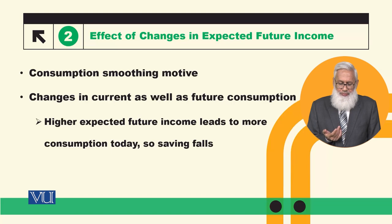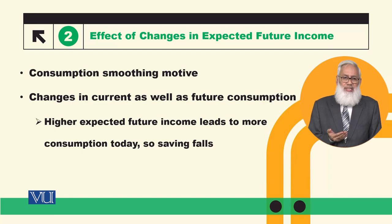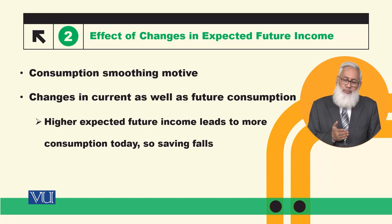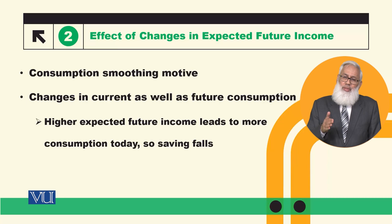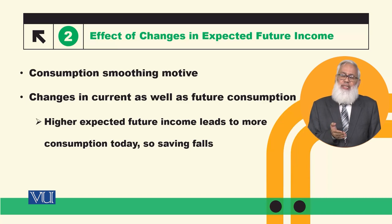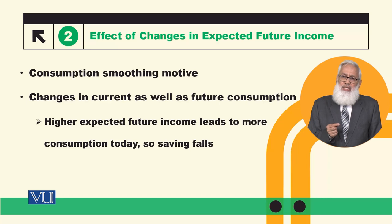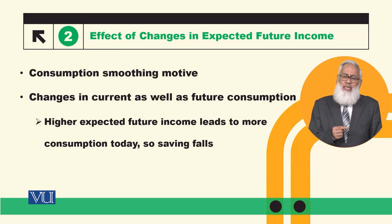When a person expects their future income to increase, as a result they will also increase their current consumption. Since their current income has not actually increased — only future income is expected to rise — the effect is that current consumption increases but current saving decreases. So remember: an increase in current income raises both current consumption and current saving, whereas an increase in expected future income raises current consumption but reduces current saving.